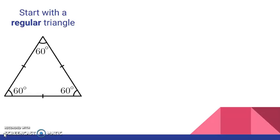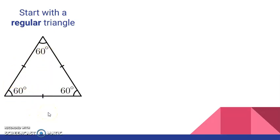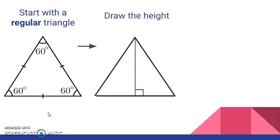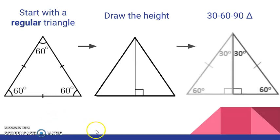First we're going to start developing the rule for the 30-60-90 triangle. We're going to start with a regular triangle — and regular doesn't mean just an average triangle. It means a triangle where all the angles are equal (equiangular) and all the sides are equal (equilateral). So we've got a 60-60-60 triangle. We're going to draw the height of that triangle in, which of course creates a 30-60-90 triangle. You can see it cuts it right in half, and I have a 30-60-90 triangle.